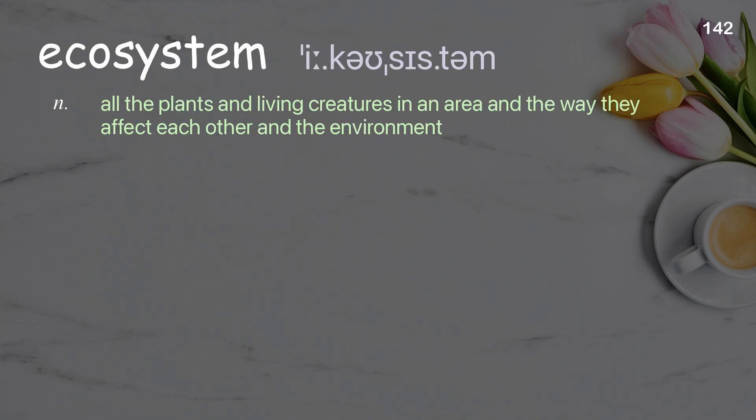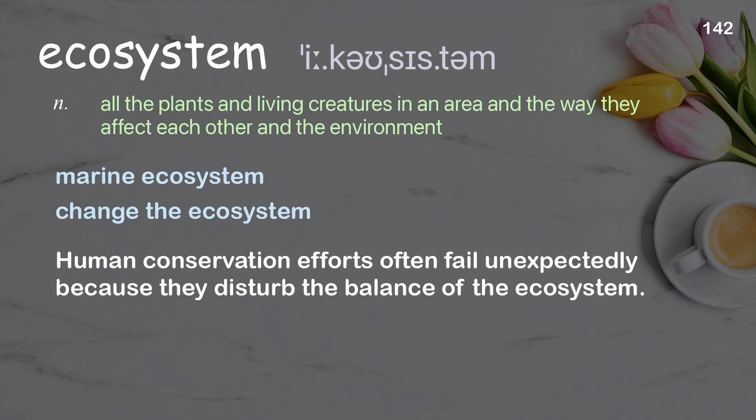Ecosystem: all the plants and living creatures in an area and the way they affect each other and the environment. Examples: marine ecosystem, change the ecosystem. Human conservation efforts often fail unexpectedly because they disturb the balance of the ecosystem.